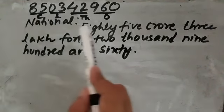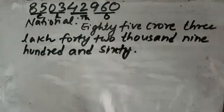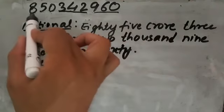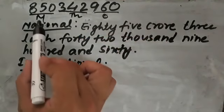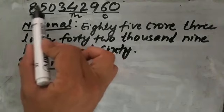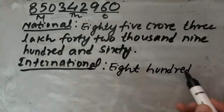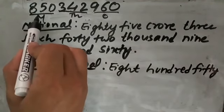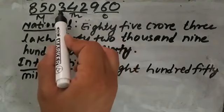The number name in national system is: 85 crore, 3 lakh, 42 thousand, 960. Now let's write it in international system. In international system each period consists of three places — ones, thousands, and millions. In the period of million there is 850, so 850 million.